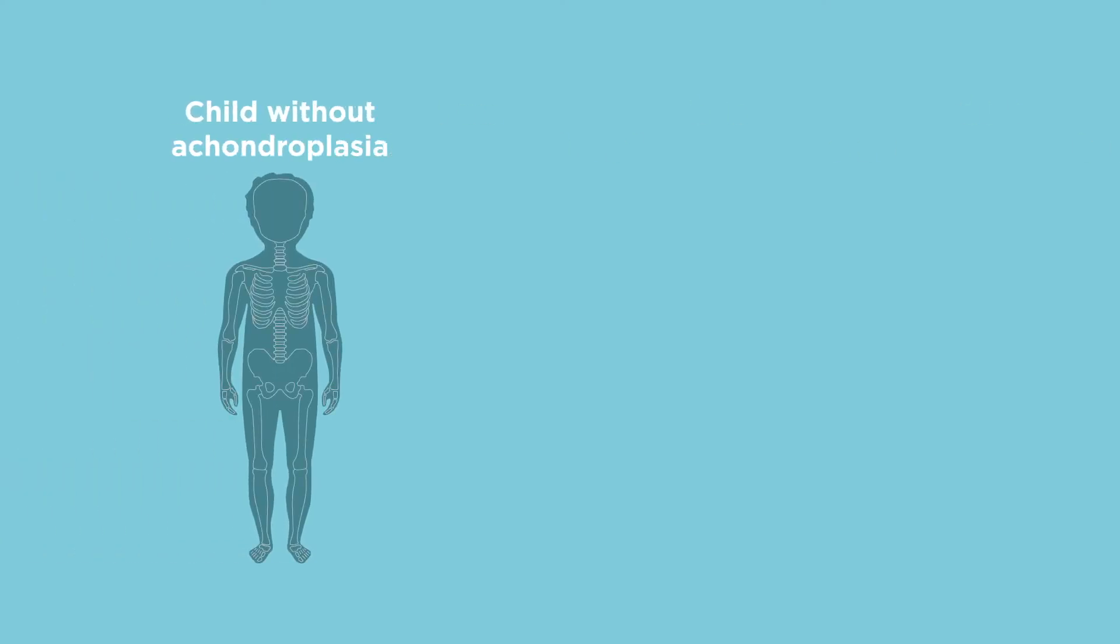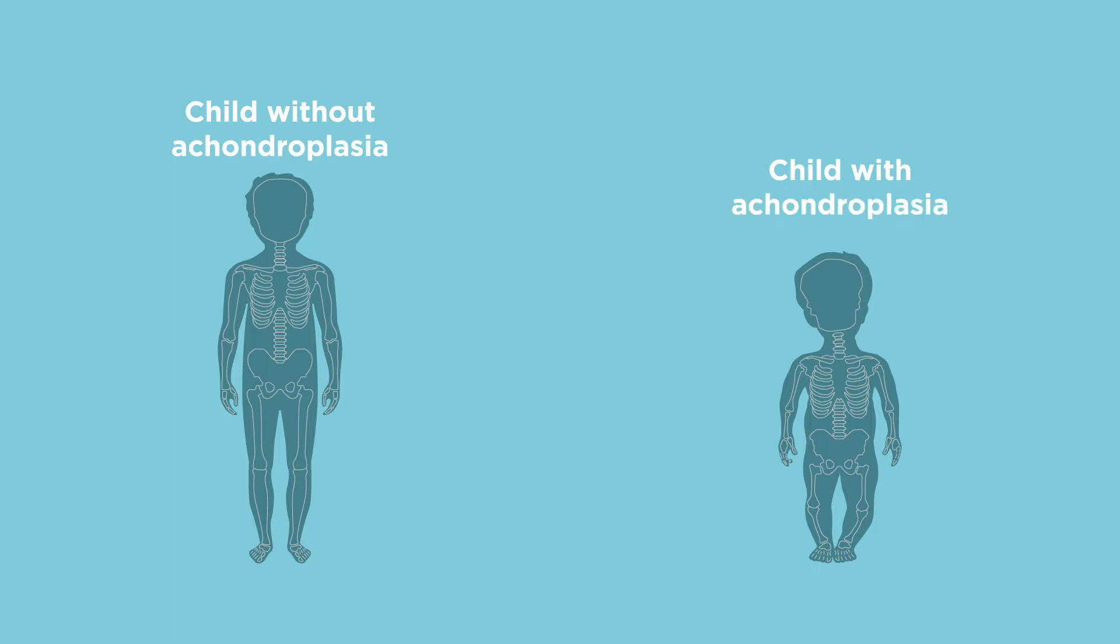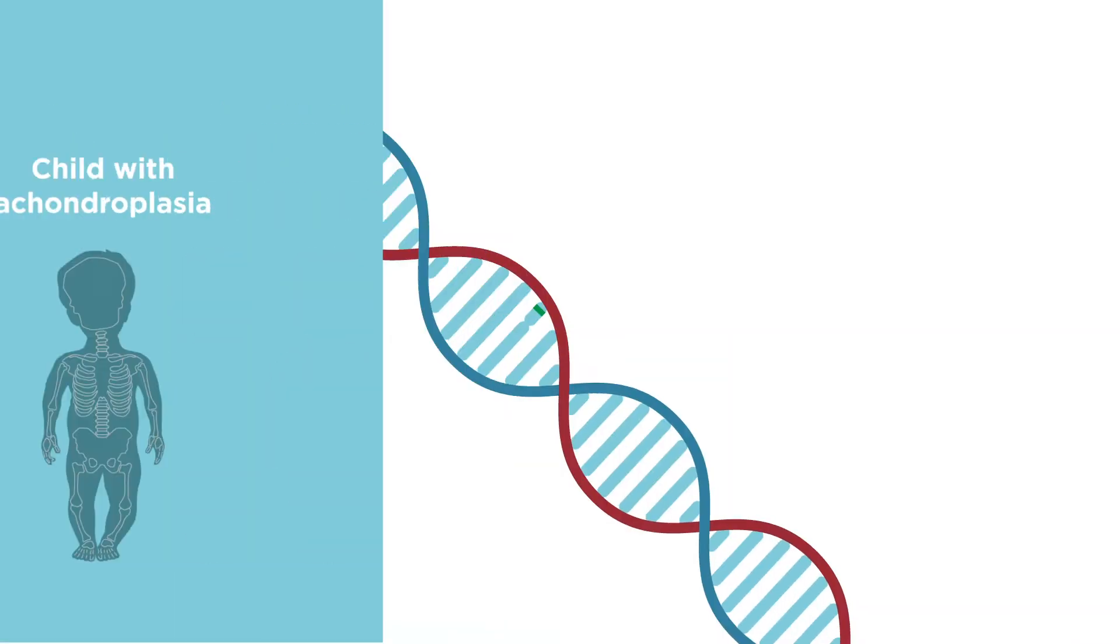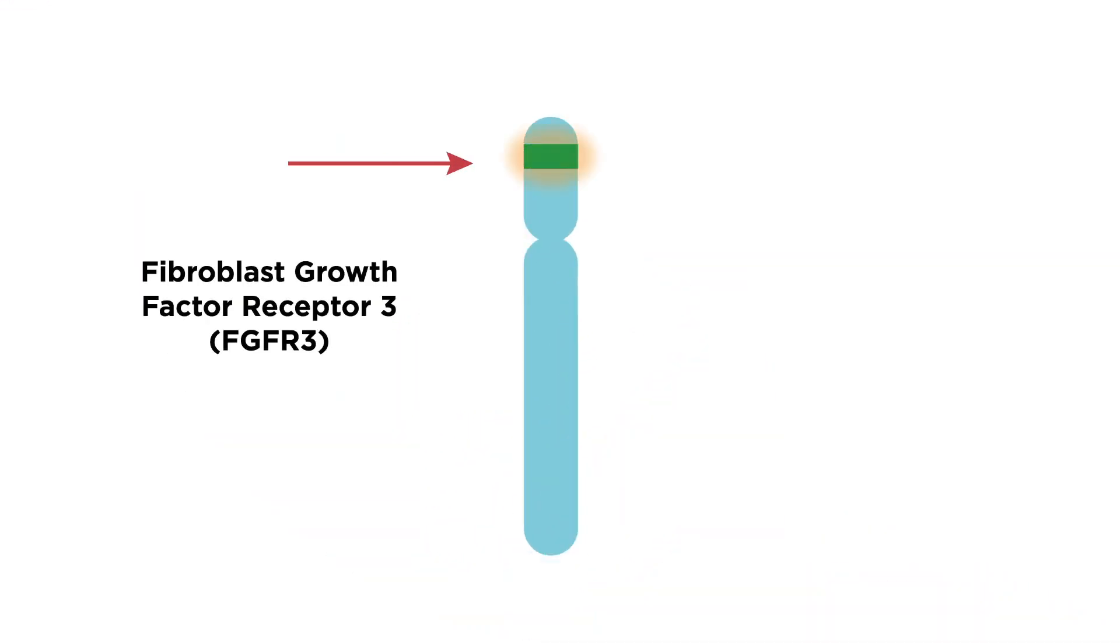Achondroplasia is the most common type of skeletal dysplasia, a condition that affects children's bones and joints. Caused by a change in the DNA, signals to slow bone growth are overactive.